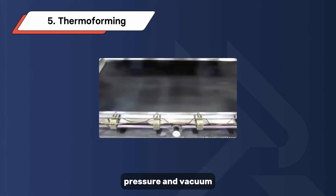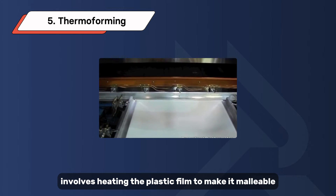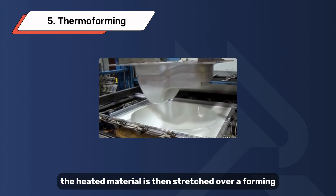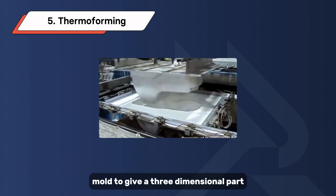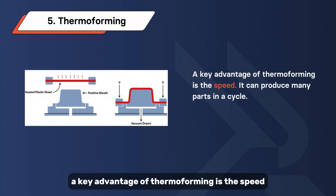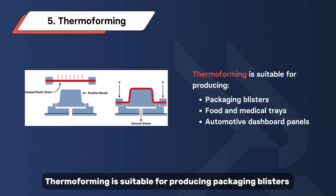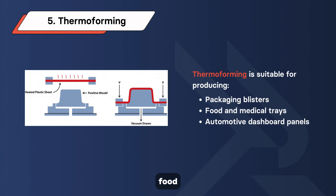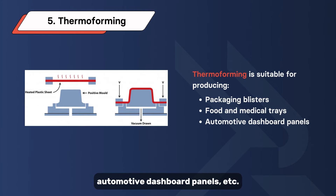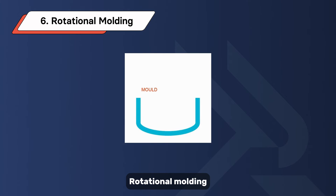Compression molding is cost-effective due to minimal raw material wastage and a simple mold structure. It is suitable for producing solid parts including video game keypads, mobile phone protective cases, and medical syringe stoppers. Thermoforming uses a combination of heat, pressure, and vacuum. It involves heating a plastic film to make it malleable, then stretching the heated material over a forming mold to produce a three-dimensional part.